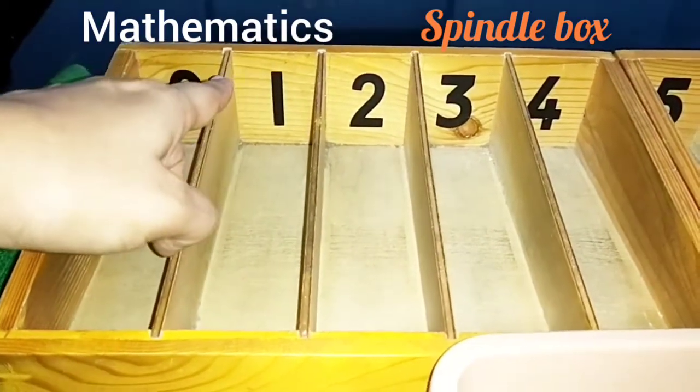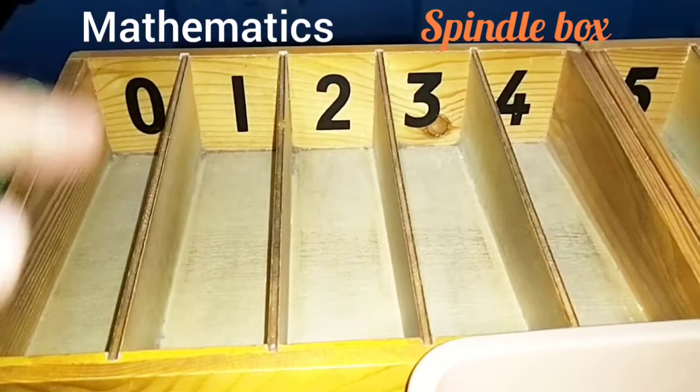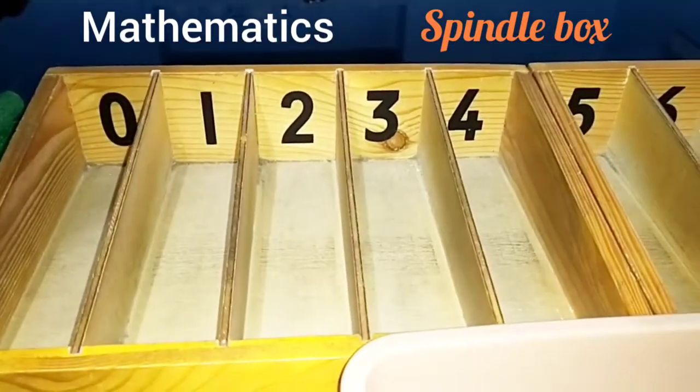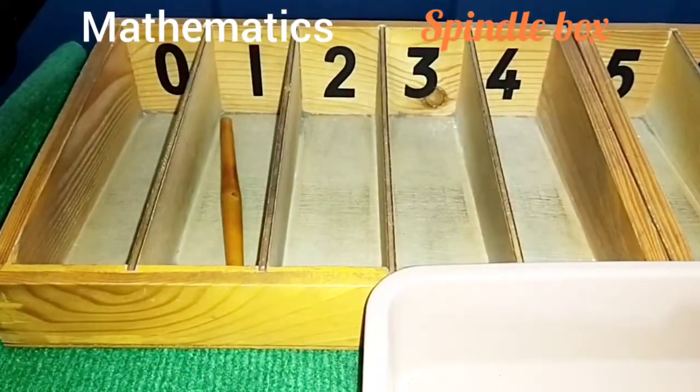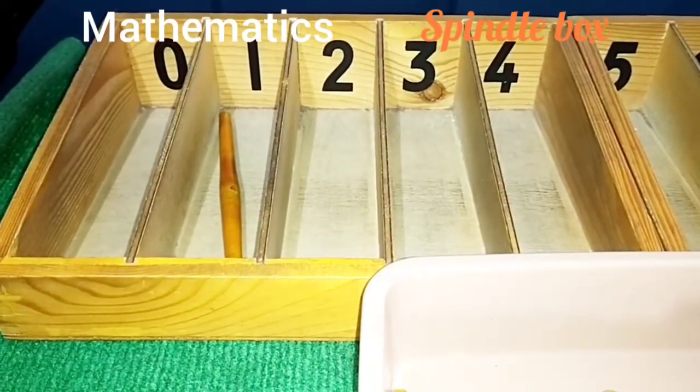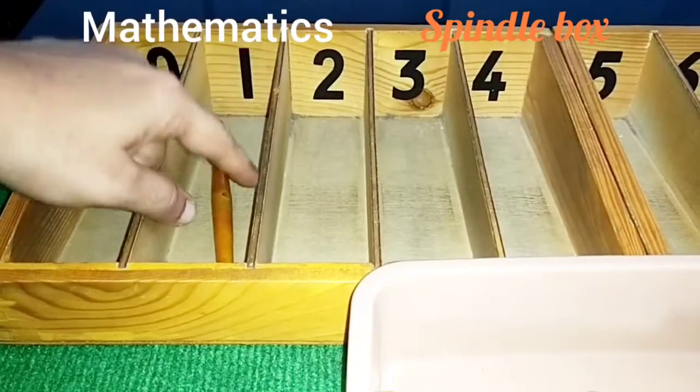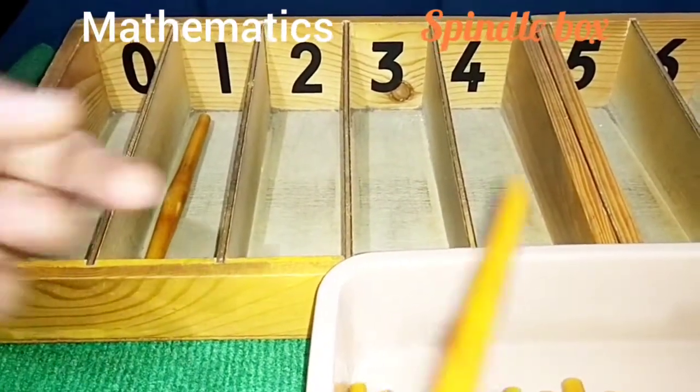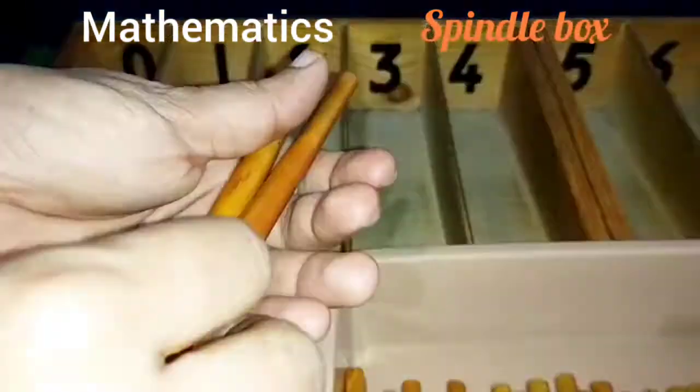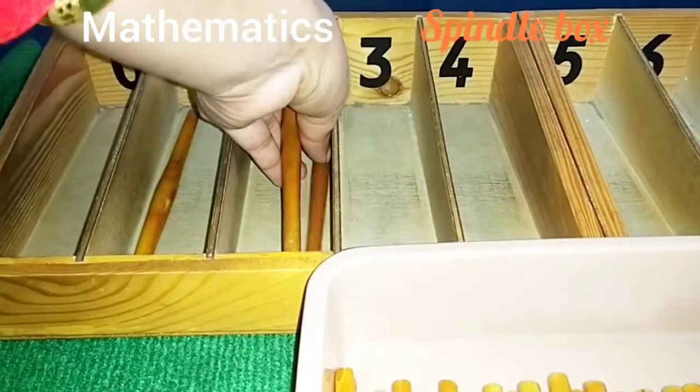This is one. So you put one spindle in that compartment. Listen. One. Place it here. One. Okay. Next, what is the number? Two. Two. So one, two. Put inside.